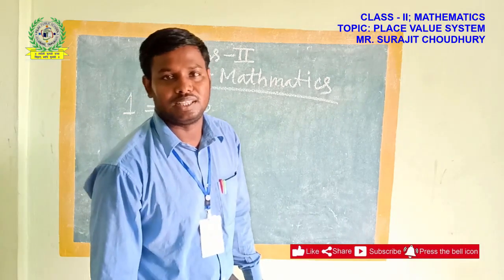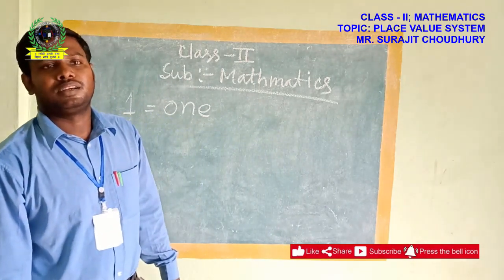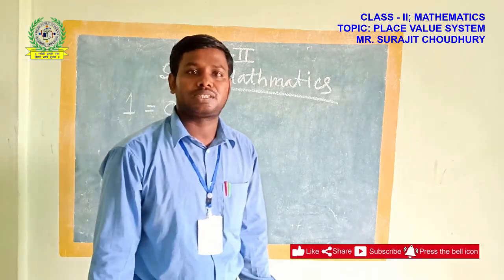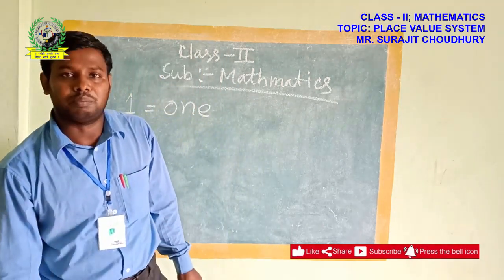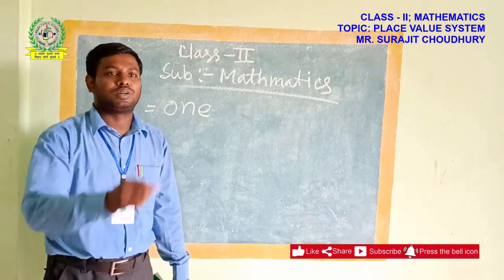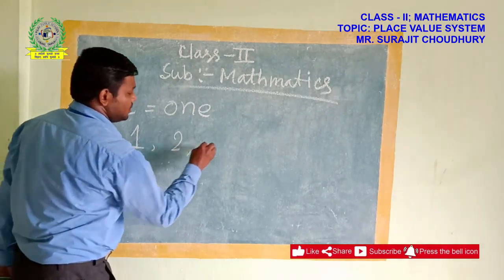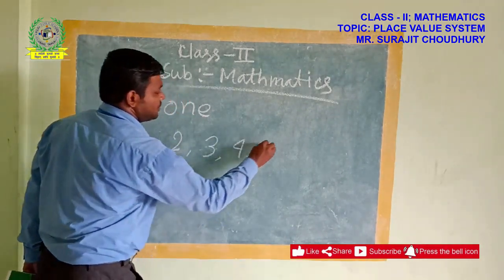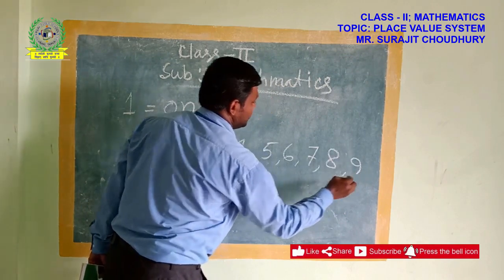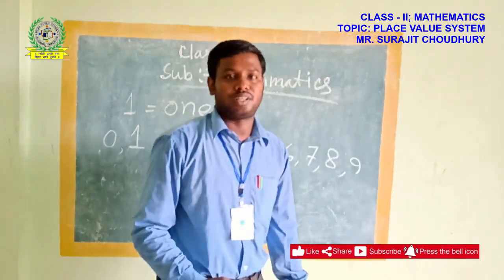It is also important in our mathematics to count any numbers, to buy something, and to observe any things, how much quantities are there. It is very much important that we have to count the numbers. We have to know the number systems. As you know from the beginning, I am just revising it: 1, 2, 3, 4, 5, 6, 7, 8, 9. There are 9 digits. With the inclusion of 0, it will be 10 digits.